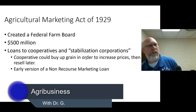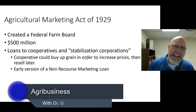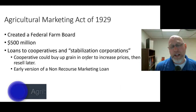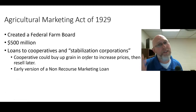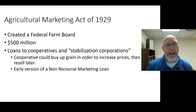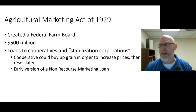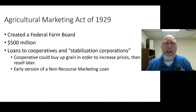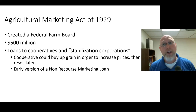In this video we're going to learn about the Agricultural Marketing Act of 1929. What else exciting and important happened in 1929? Well, there was a stock market crash in 1929 that is generally believed to be the beginning of the Great Depression.